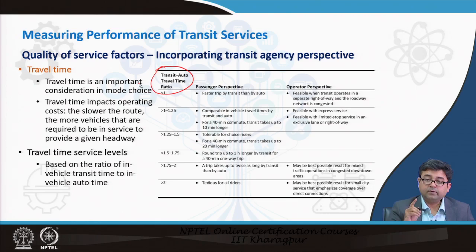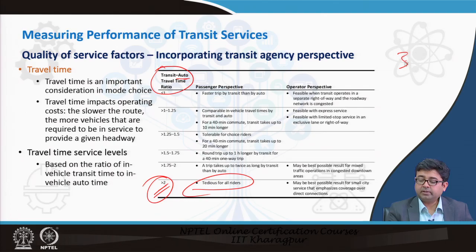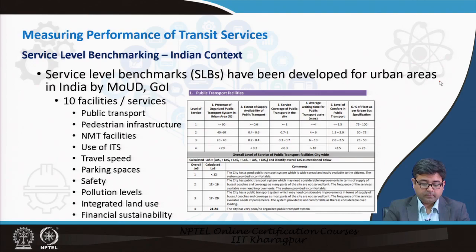Travel time is always measured as a transit-to-automobile travel time ratio. As the ratio increases, it becomes tedious for all riders — nobody wants to take a public transportation system that takes twice the time as their private vehicle. For example, if it takes 30 minutes by car and 60 minutes by public transportation, obviously you will not take public transportation.